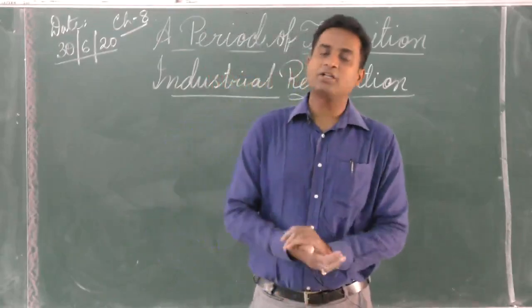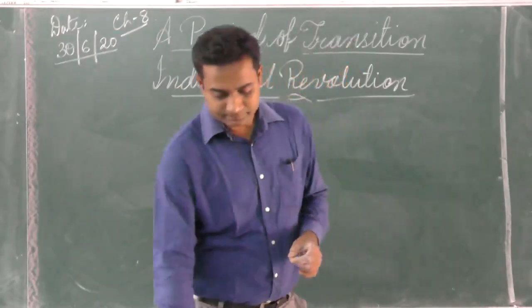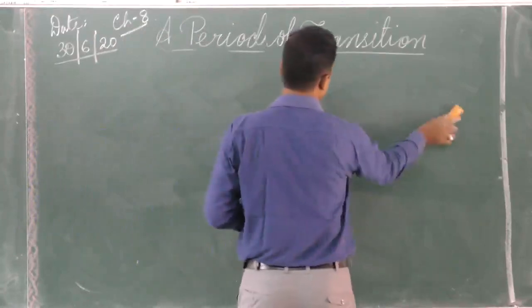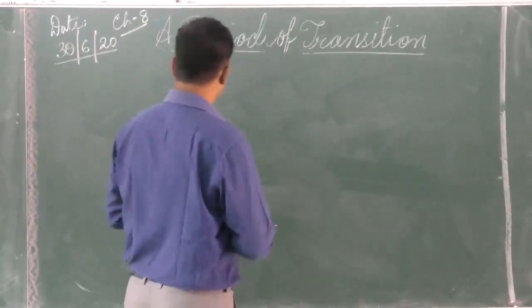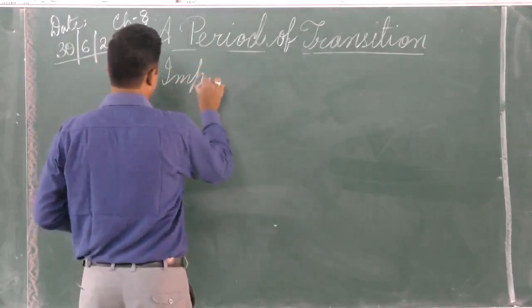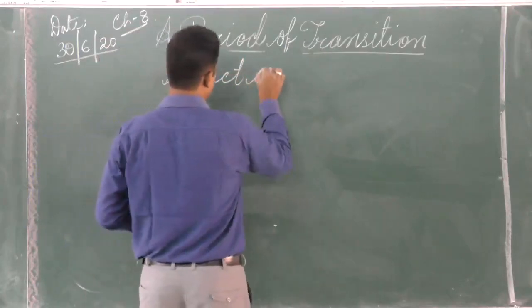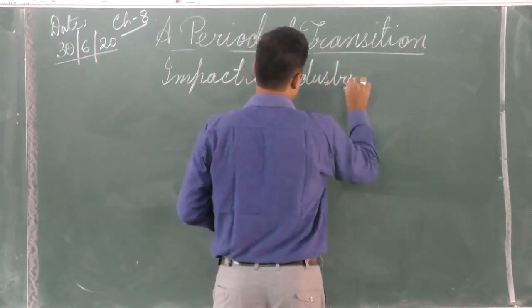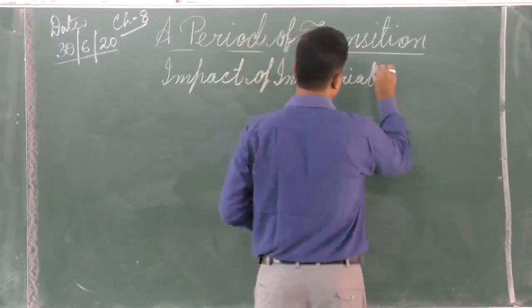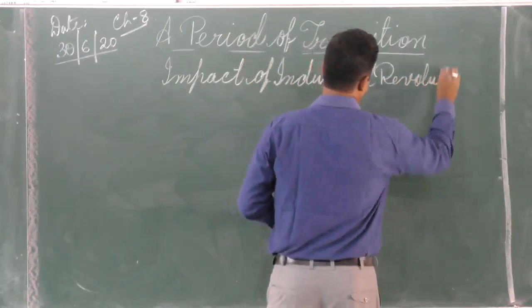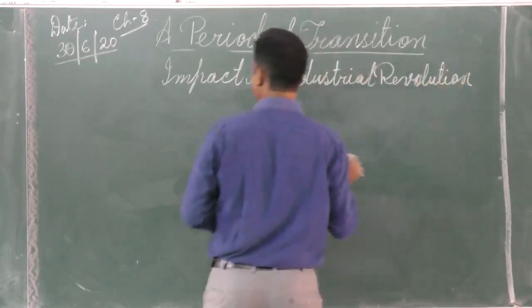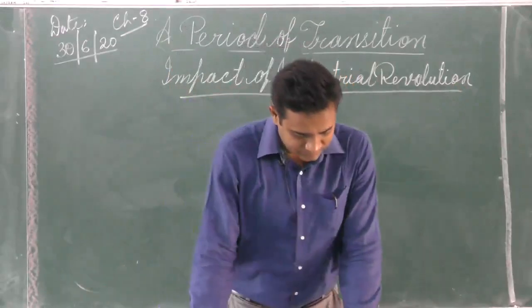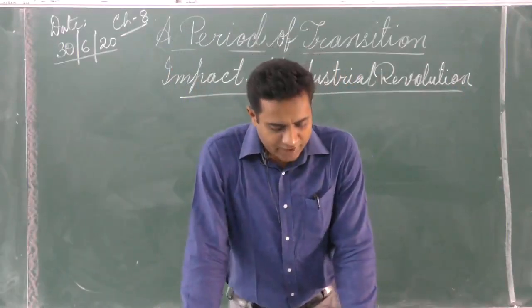Next is the impact of the Industrial Revolution. The first impact is mass production of a variety of goods.